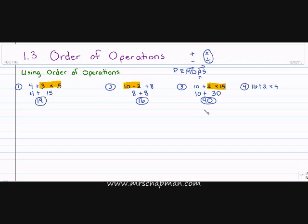On to the next one: sixteen divided by two times four. No parentheses, no exponents — all multiplication and division. Even though PEMDAS lists M before D, I solve left to right, so division comes first. Sixteen divided by two is eight, and eight times four is thirty-two.